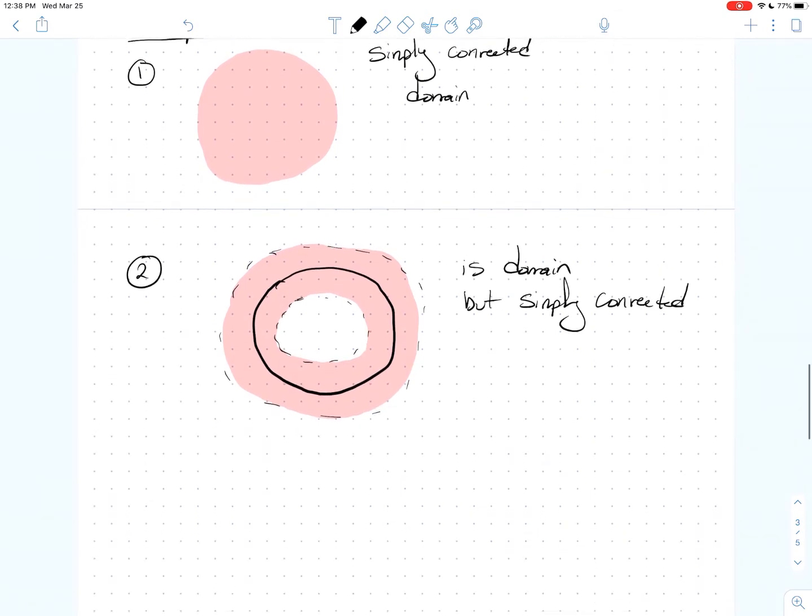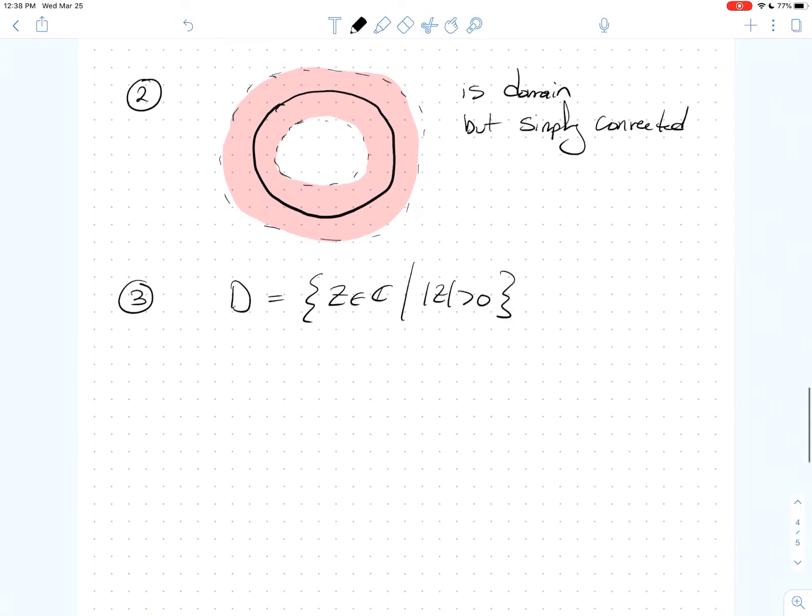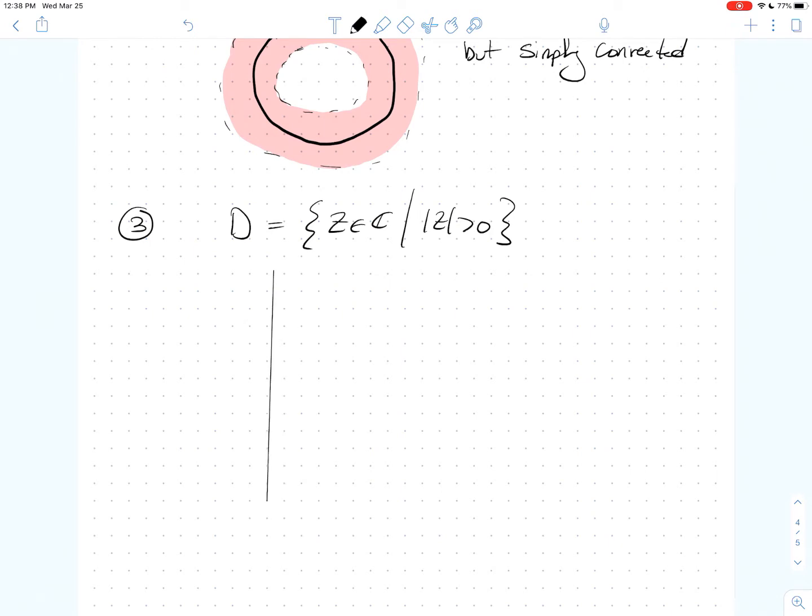And on a similar note, let's look at one more example. This is one we've looked at before. So we looked at the domain D where D is the set of all Z in the complex plane such that the modulus of Z is positive. And so what does that look like? Well, it's just everything delete the origin, right? So I'm removing this point at the origin and then everything else is in D. And again, you can tell this is not a simply connected domain. This is a domain.